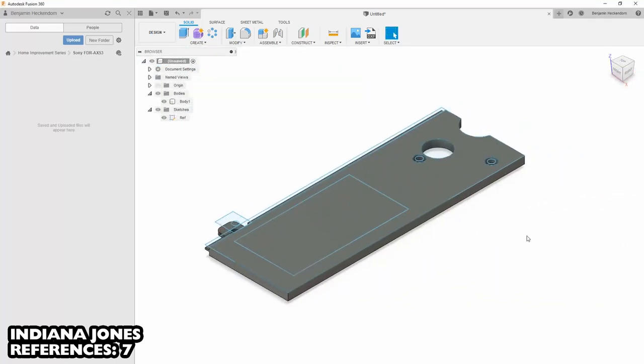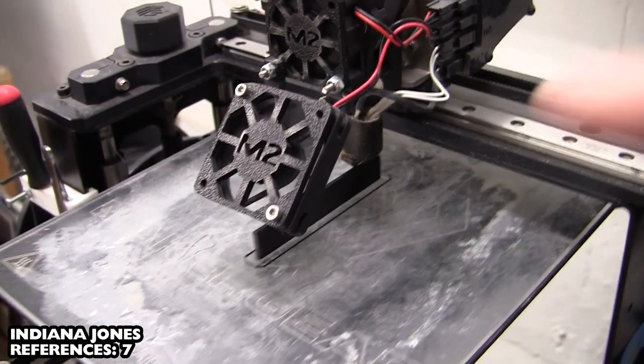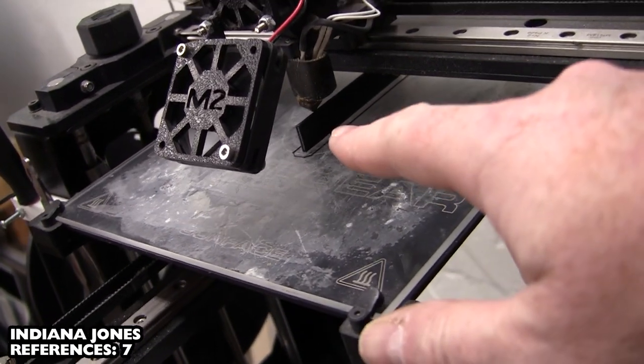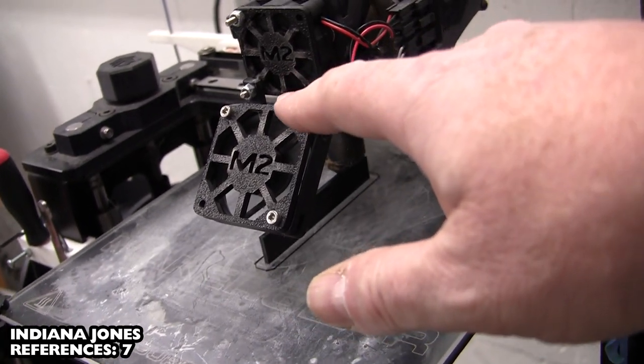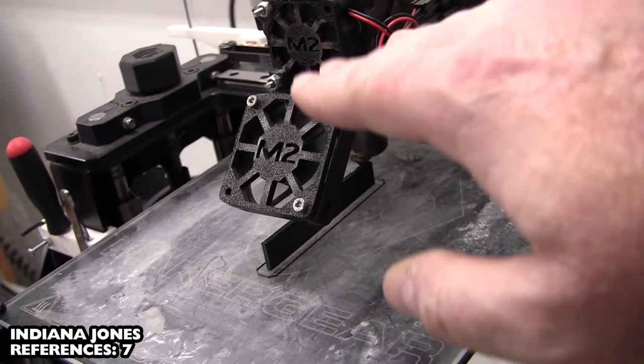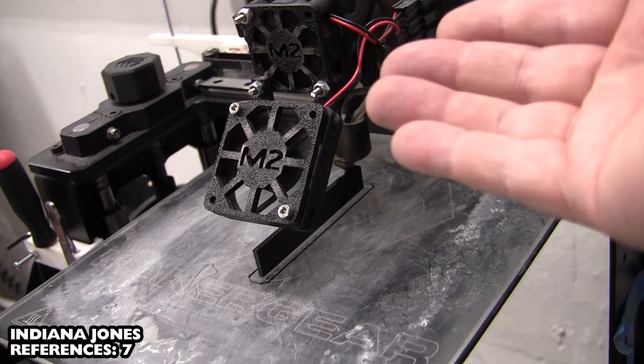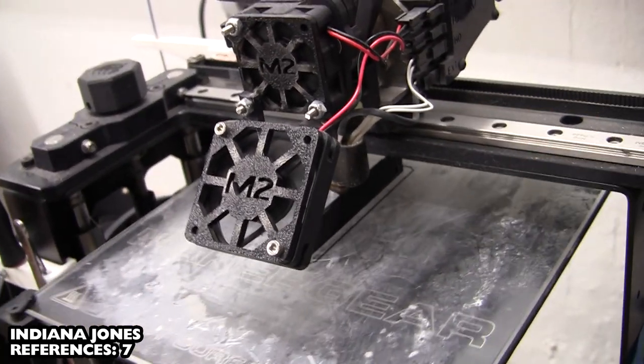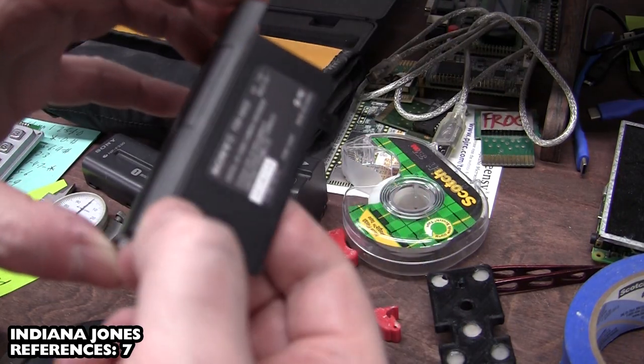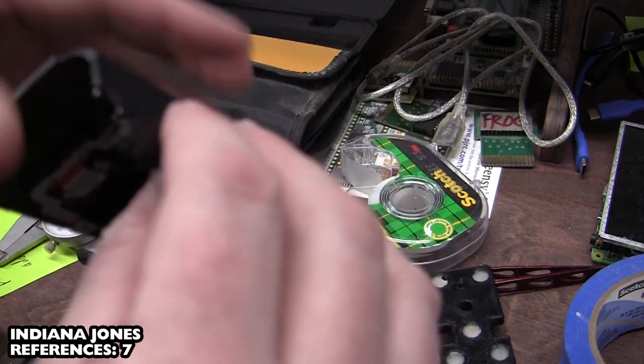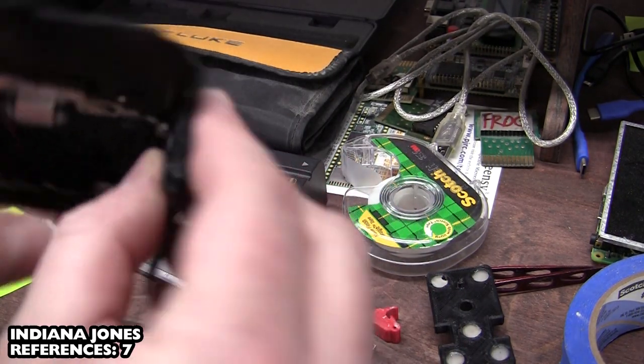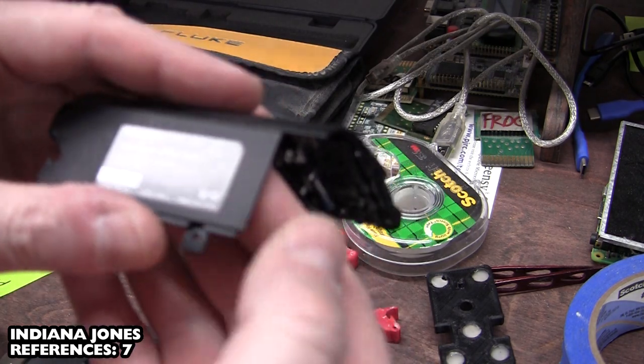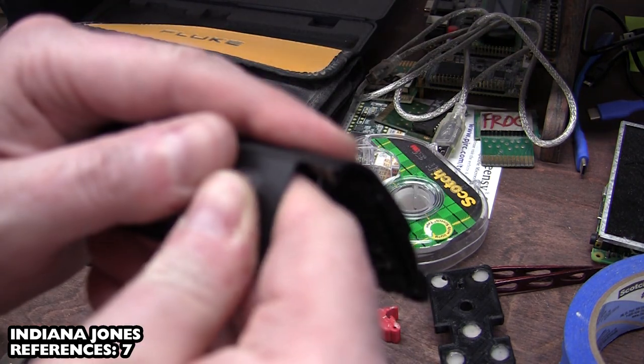So what I think I'll do is 3D print this. It won't take very long, and then we can see if it fits. I'm actually printing it on end because all of the weird features, like the tabs and the lip, are at the top. So if I print it end up, I don't need to worry about additional support. So I scored this several times with an X-Acto knife. This is ABS.